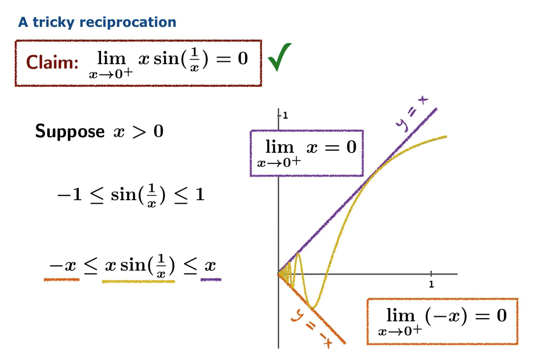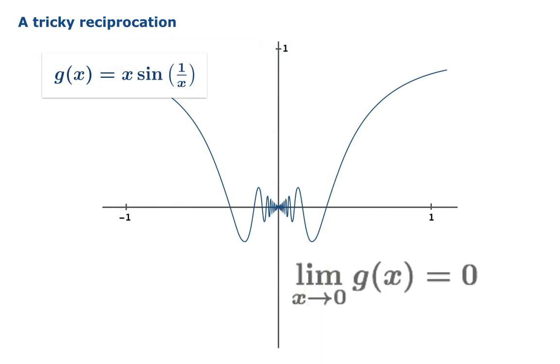You can play the same game from the left to establish that the limit from the left is also zero, and therefore the limit of this function as x approaches zero is zero.